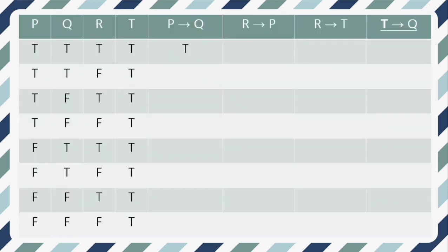Here is the truth table for our next example. You might be wondering why there are 8 rows of Ts and Fs instead of 4 like the earlier example. We are using 8 rows because there are 3 variables, and the number of rows is determined by 2 raised to the number of variables: 2 × 2 = 4, and 4 × 2 = 8. Therefore, we have 8 rows.